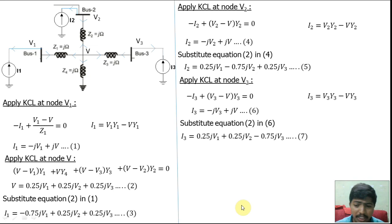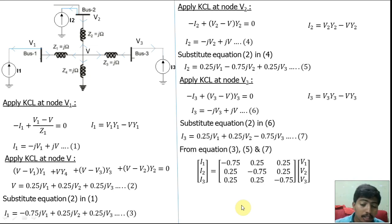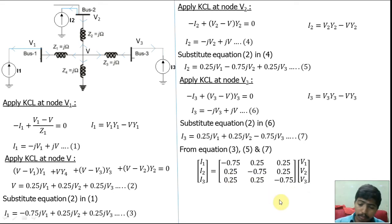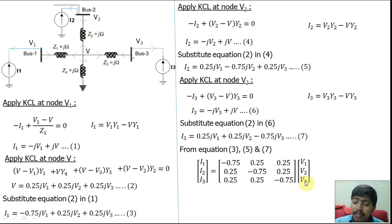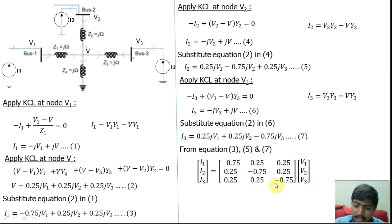From equations 3, 5, and 7, we can write the matrix form: I1 = −0.75j·V1 + 0.25j·V2 + 0.25j·V3, and similarly for I2 and I3. Here I1, I2, I3 are the currents injected to the buses, and V1, V2, V3 are the bus node voltages — exactly the required variables. This gives us the Ybus matrix, and the answer is option B.